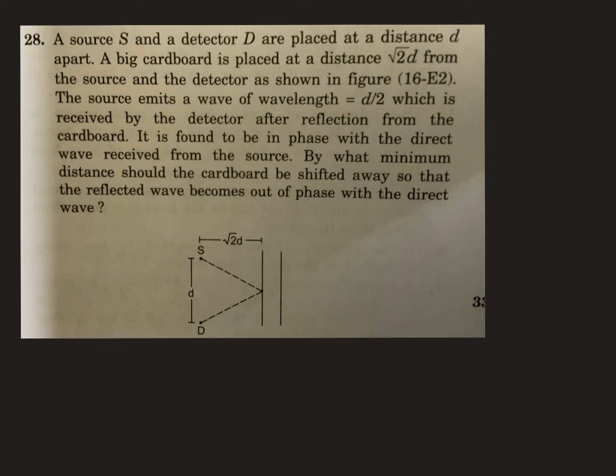Source and the detector are placed at a distance d. A cardboard is placed at a distance root 2d from the detector. The source emits a wave of wavelength d by 2.